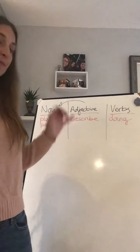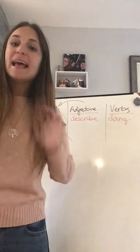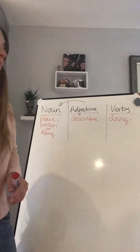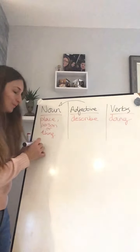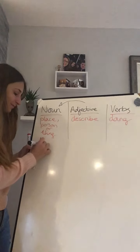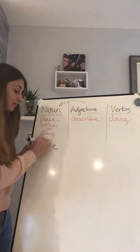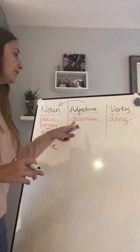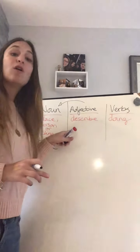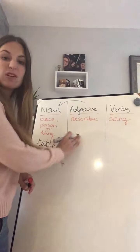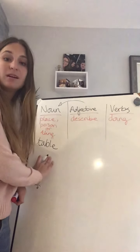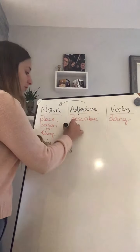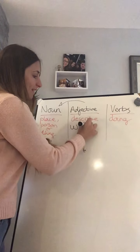So let's go and have an example. A noun — I can say a table. Table is a thing, isn't it? I'm going to give you an example of an adjective. I'm going to describe my noun. My table is white — I'm going to describe the color. White.